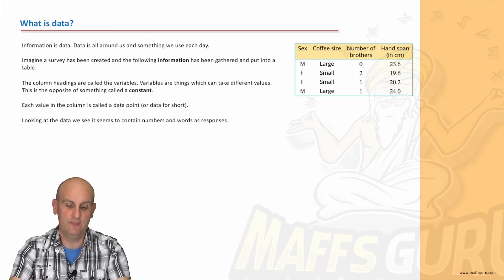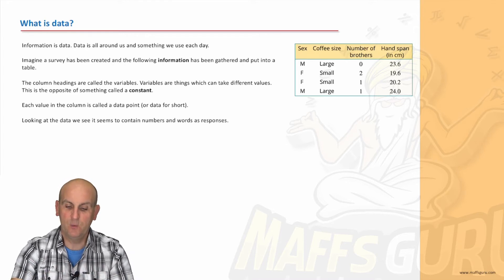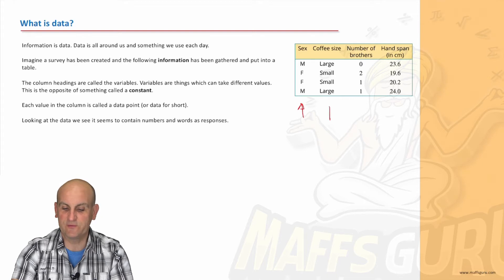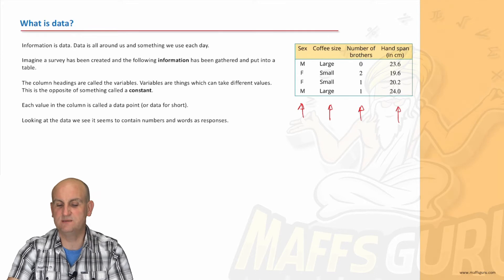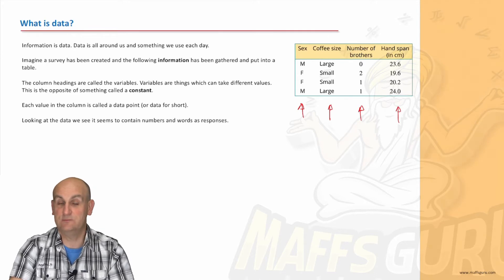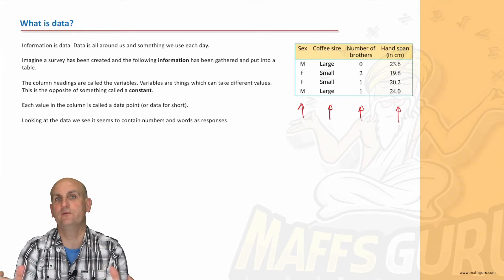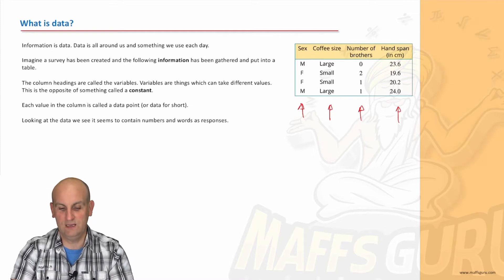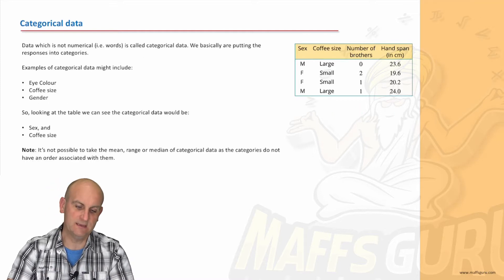But what it is going to highlight is the difference between the types of data that we can have. So as you look here, we've got this column with M's and F's. This here with large and smalls. This here has some numbers, but they seem to be whole numbers. And those numbers there have decimal places. And each of those types of things are really important to us.